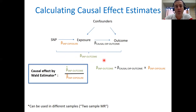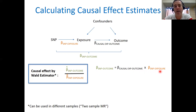Now, it should be apparent that if there are linear relationships between these variables, then beta SNP-outcome should be just the product of the causal effect of the exposure on the outcome multiplied by the effect of the SNP on the exposure. So if we just rearrange this formula, we get an expression for the causal effect: that's beta SNP-outcome divided by beta SNP-exposure.